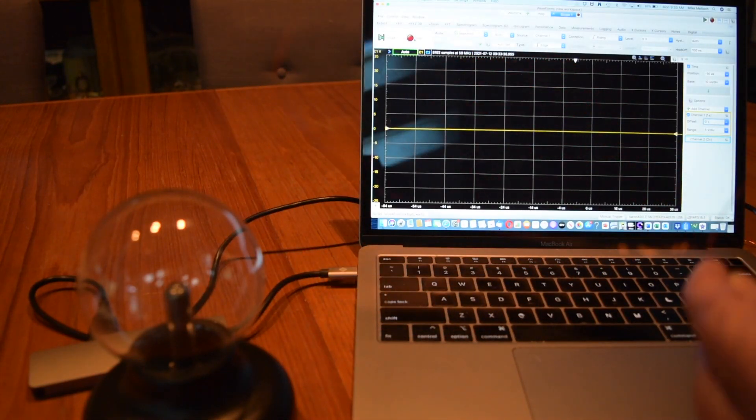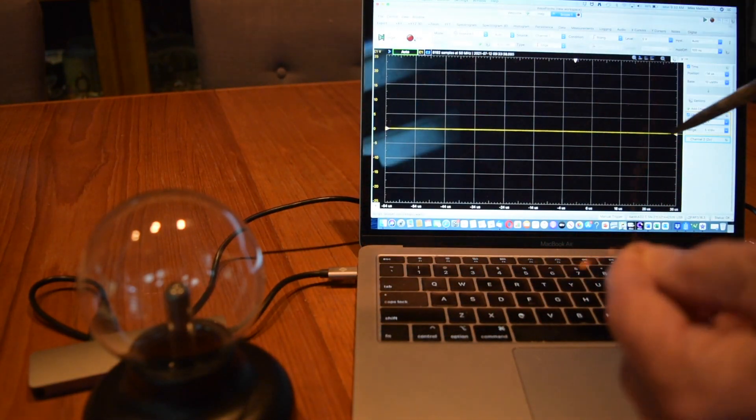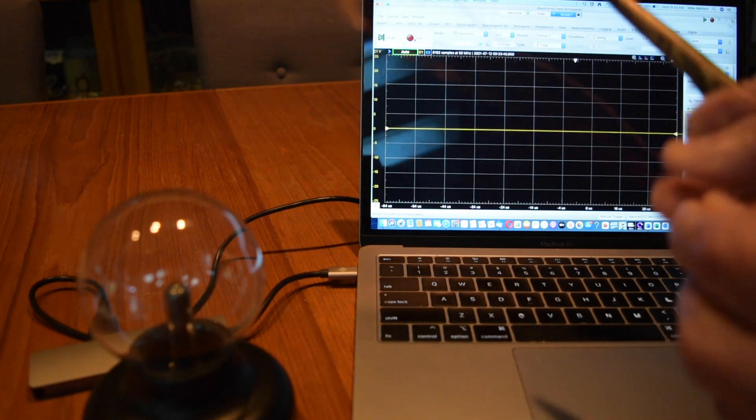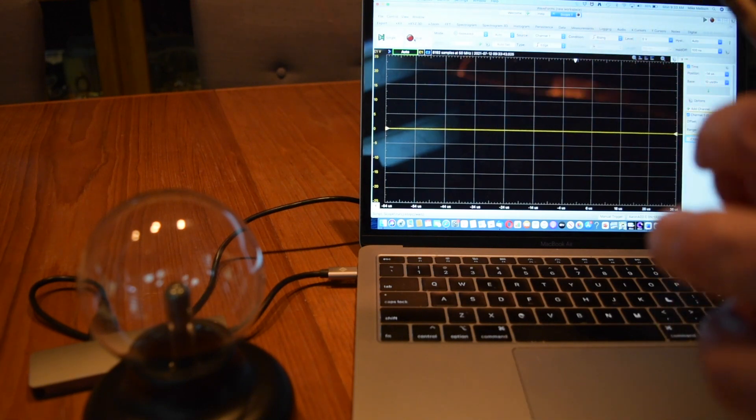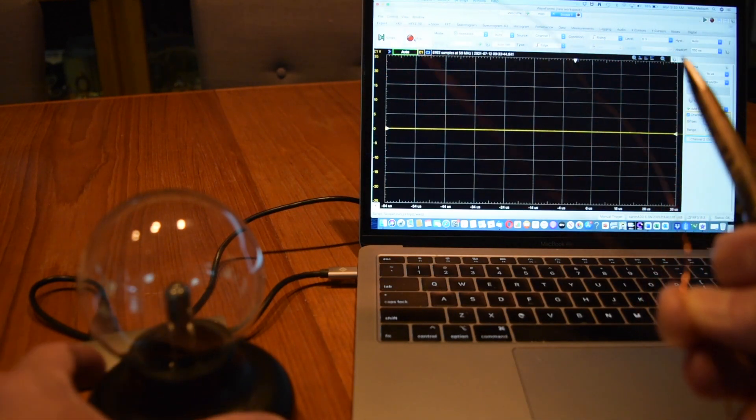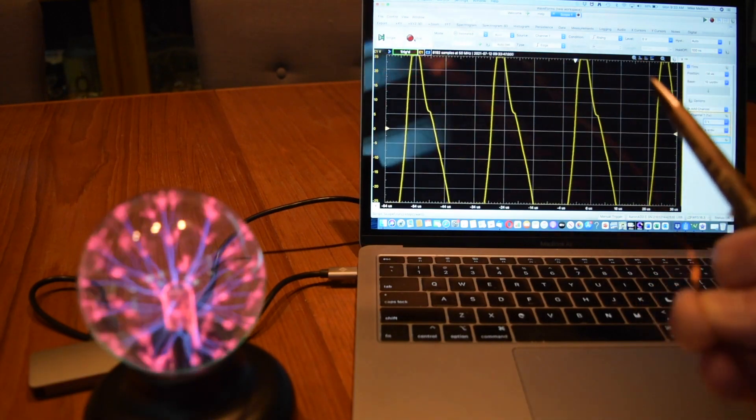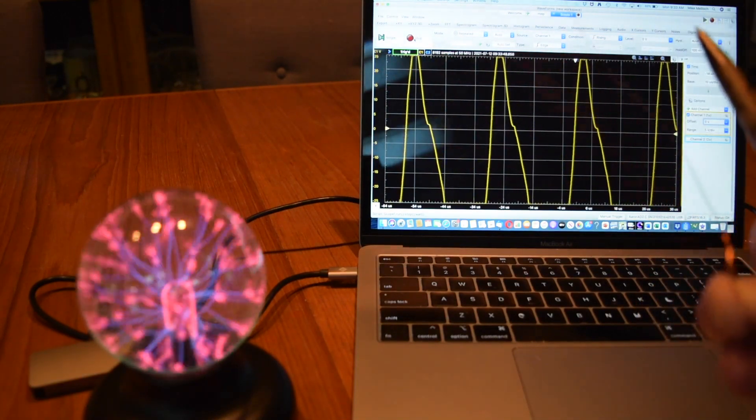The globe is off and the oscilloscope trace is flat, indicating my antenna is not picking anything up. So let me turn on the plasma globe and you see I'm picking up an AC signal, a very strong one.